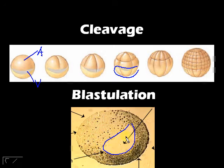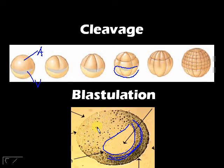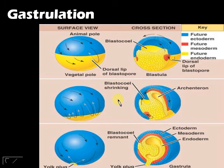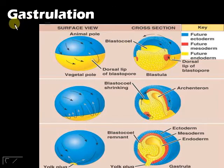This cavity is the blastocele. The cells in the animal pole are called micromeres, and the cells in the vegetal pole are larger and called macromeres. So from cleavage to blastulation — after blastulation, you proceed to gastrulation.